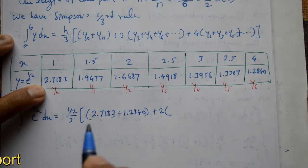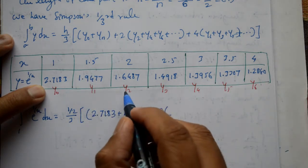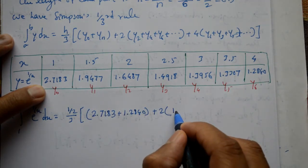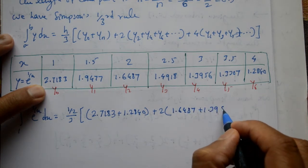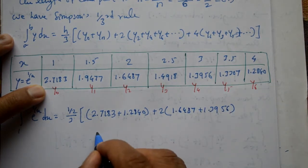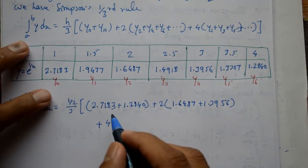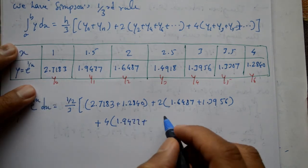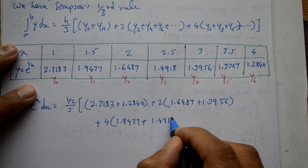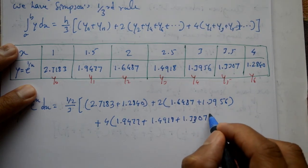Plus 2 into even number hai. So 2, 4 lena hai, 6 isko bhi nahi lena hai, value repeat nahi hona chahiye, ek bar lena hai. y2 into y4 ko lena hai. So 1.6487 plus 1.3956 hai, plus baad me 4 into odd number y1, y3 y5 lena hai. So y1 ka hai 1.947 hai, plus y3 kya hai 1.4918 hai, plus y5 kya hai 1.3307 karke hai.